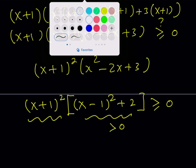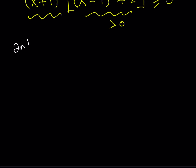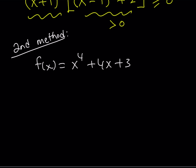Let's look at our second method, which involves some calculus. Don't be afraid of calculus because it can sometimes be easier than algebra if you have a good foundation. I'll take this as a function f of x and prove it's non-negative by differentiating. When I differentiate, I get four x cubed plus four. I set the derivative equal to zero to find the critical points, because if the first derivative is zero at a point, you might have a maximum, minimum, or inflection point.